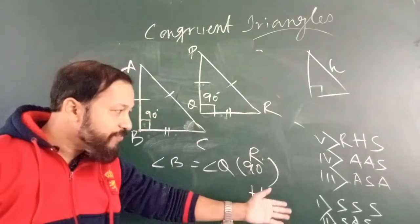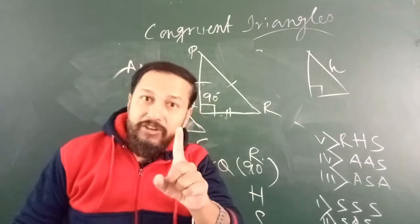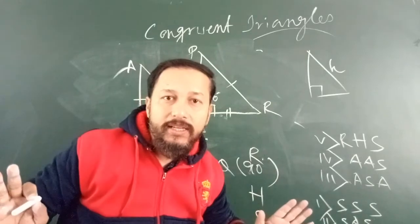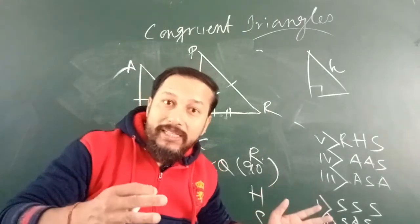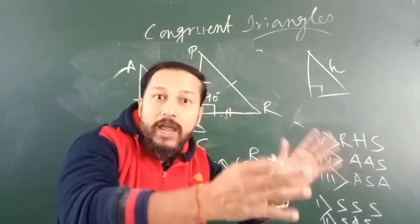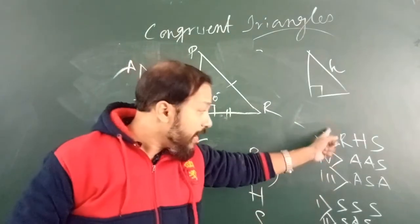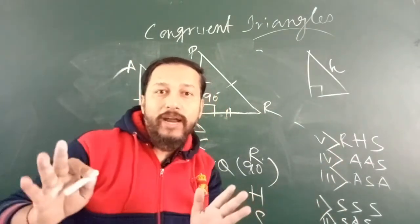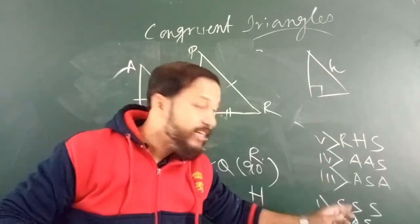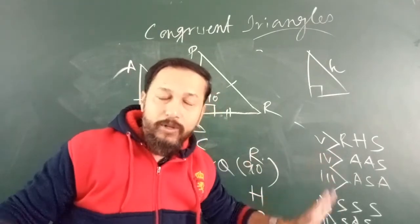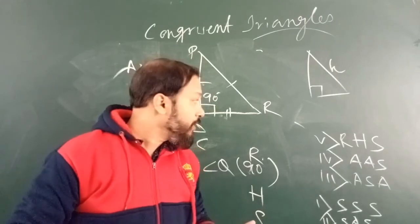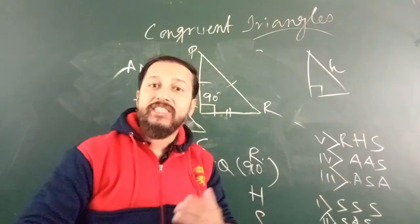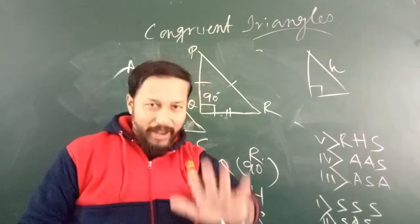These are the five criteria. Any one criteria you have to use to show two triangles are congruent — you do not have to show all the criteria, only one. Congruent means the triangles are same to same. In our next video we will discuss more problems and how to apply these criteria. Thank you.